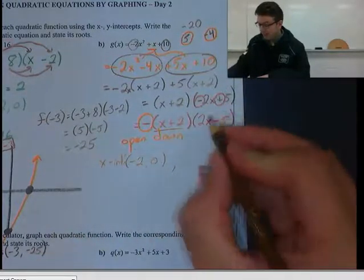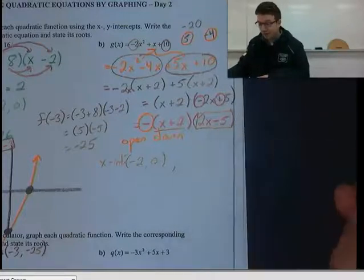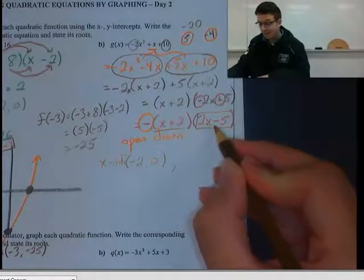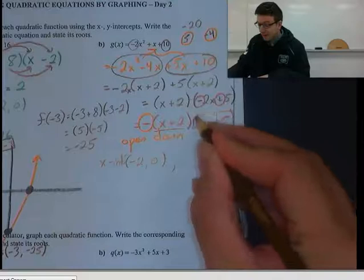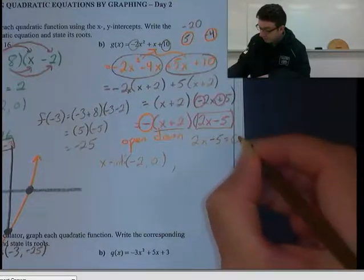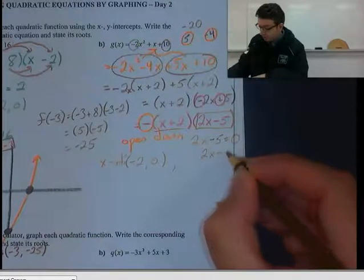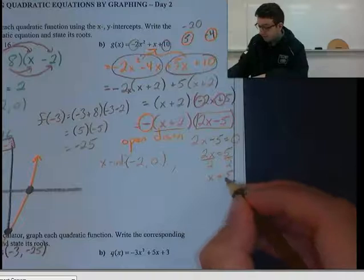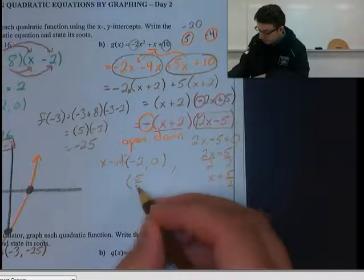But we need another x-intercept right here. Now you can't just take positive 5, because that won't make this bracket 0. If you took positive 5 and substituted it for x, you would get 2 times 5, which is 10, and then subtract 5, which is 5, not 0. So we need to figure out what value of x is going to make this bracket 0. We can write a little equation on the side here and solve for x. So let's bring 5 to the other side. So we have 2x equals 5. Divide both sides by 2. And we get x equals 2 and a half, or 5 halves. So there's our other x-intercept. It's 5 halves and 0.